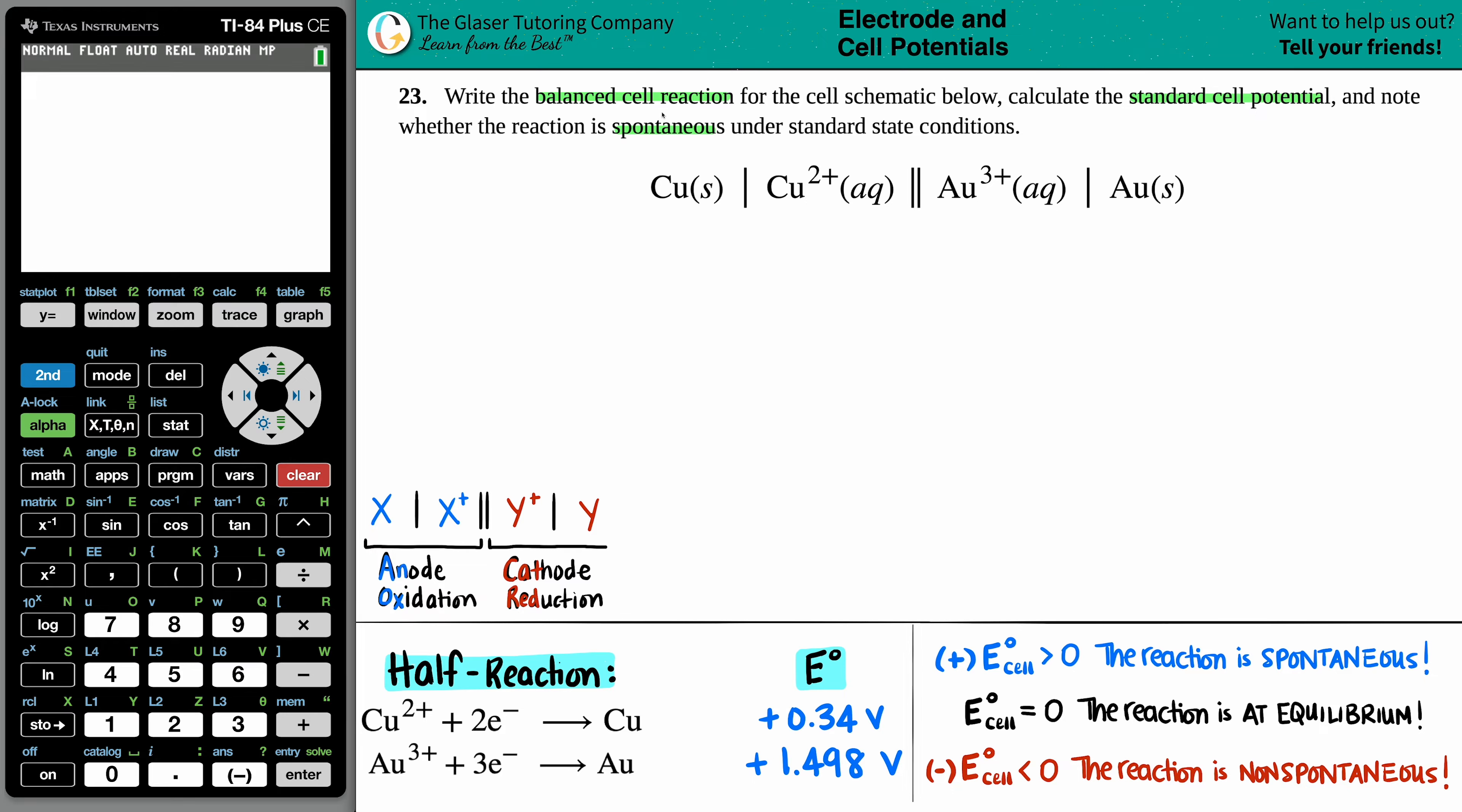There's three things that we basically have to do here. We have to get the actual balanced equation, then calculate the cell potential and determine whether it's spontaneous or not. The easiest thing to do, especially if they give you a cell schematic, is just going straight for the cell potential.